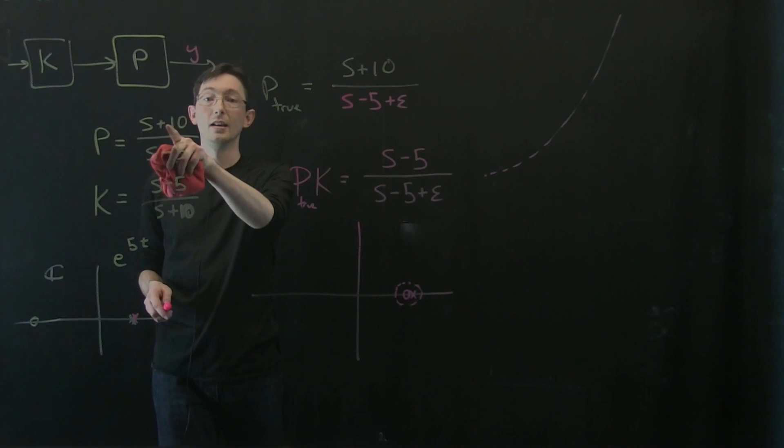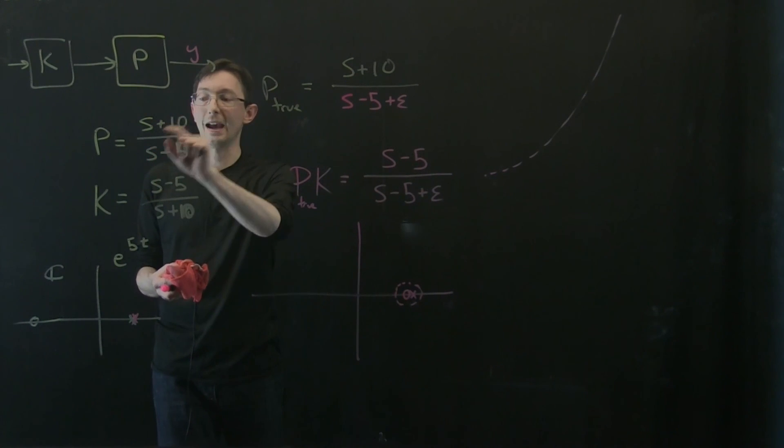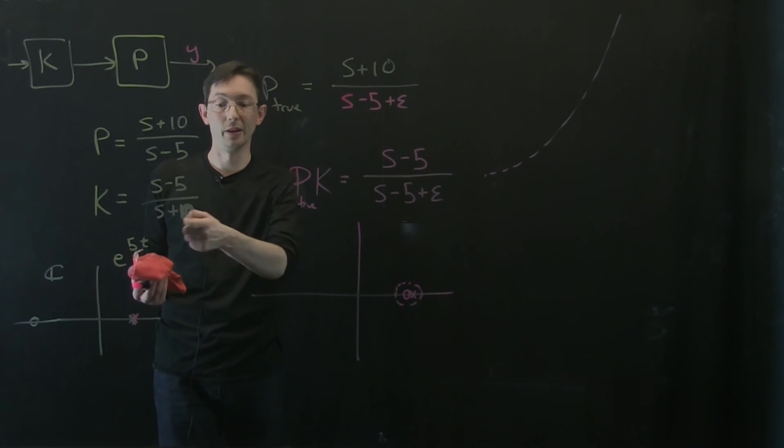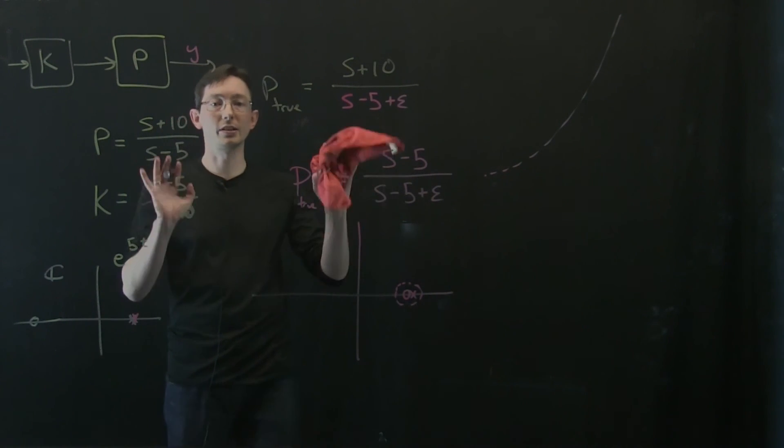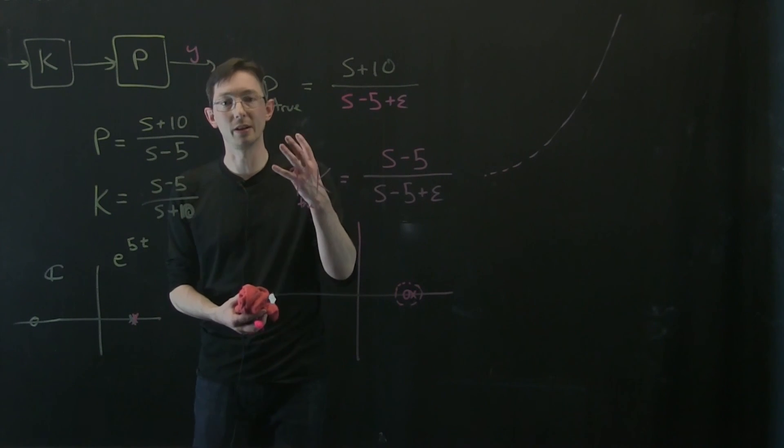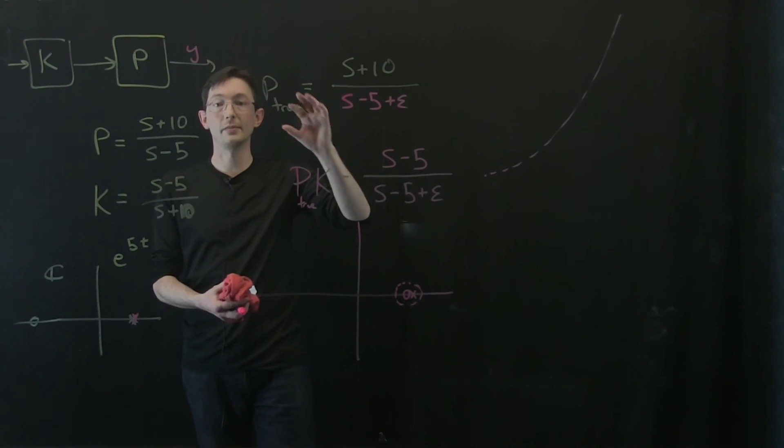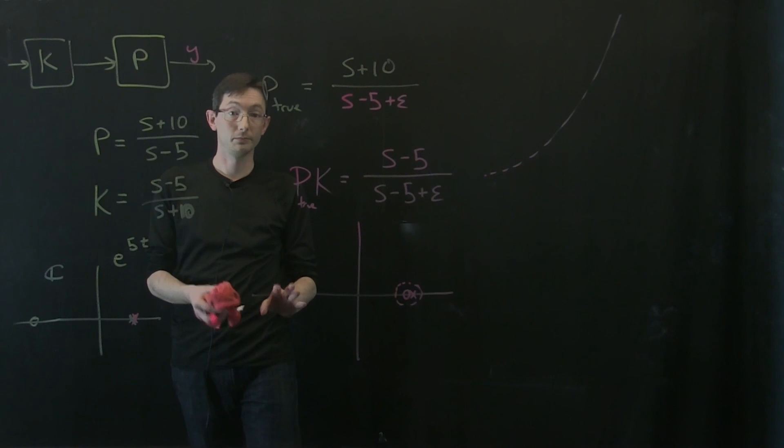And also if I had a right half plane zero, I also couldn't invert that because then my controller would be unstable. It would have a right half plane pole. So both of those are hard to deal with. This is just a very simple example, but I want you to be aware that inverting these systems requires extreme caution.